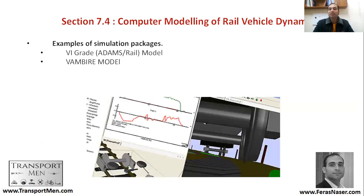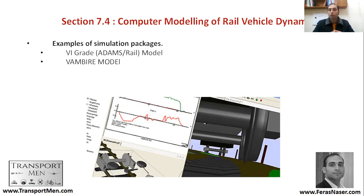For examples of simulation packages: after collecting this data, you can build your software, although several software packages have already been developed. The Adams Rail model has been developed, and there is also the Vampire model. Vampire is software that can help calculate vehicle dynamics based on carefully considered models and their accuracy. It has been used by famous companies in the UK.